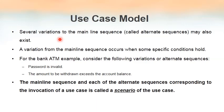In the case of ATM, we can consider two examples of alternate sequences: when we are entering a wrong password, or when our account does not contain enough amount — if the amount we typed to withdraw is more than the account balance. In both these cases it is actually deviating from the main line sequence. All together, the main line sequence and each of the alternate sequences corresponding to the invocation of a use case is called a scenario of the use case.